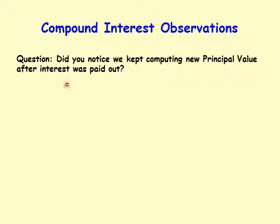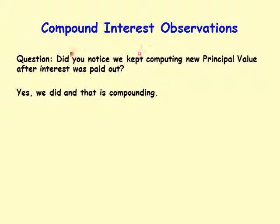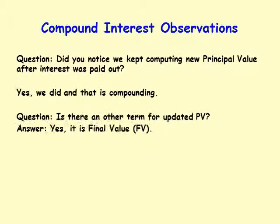Let's make some observations. Did we keep computing a new principal value after each interest payment? Yes — that is the compounding. We are rolling the interest paid into the new principal each term. As for terminology, the last updated principal paid out may be called the final value in some circles, while intermediate updated principal values are simply called updated principal values.